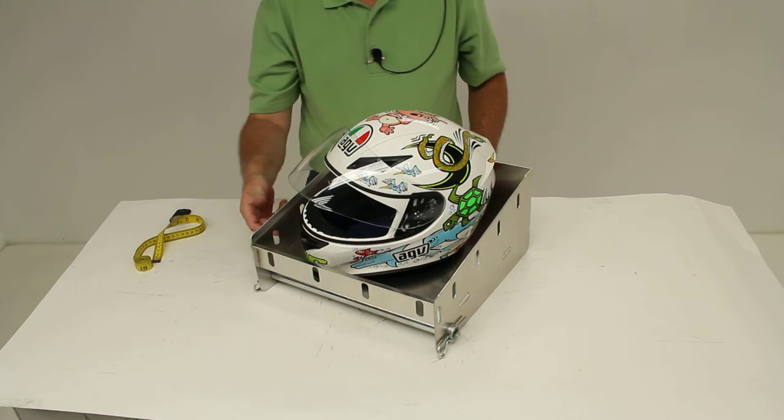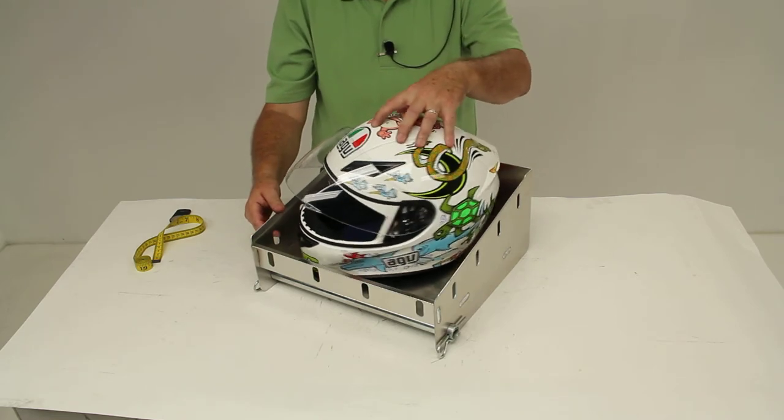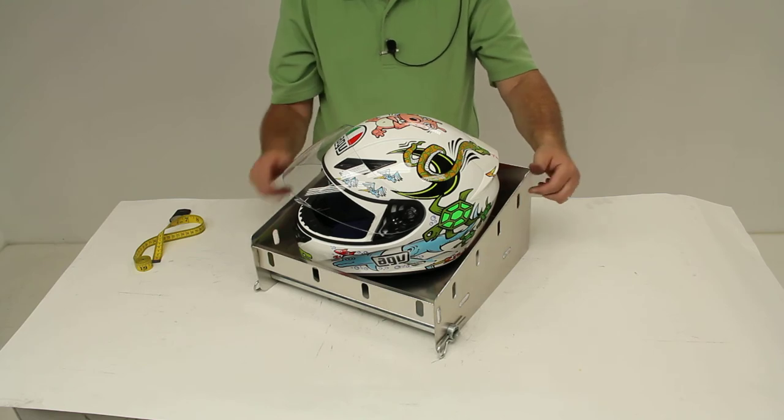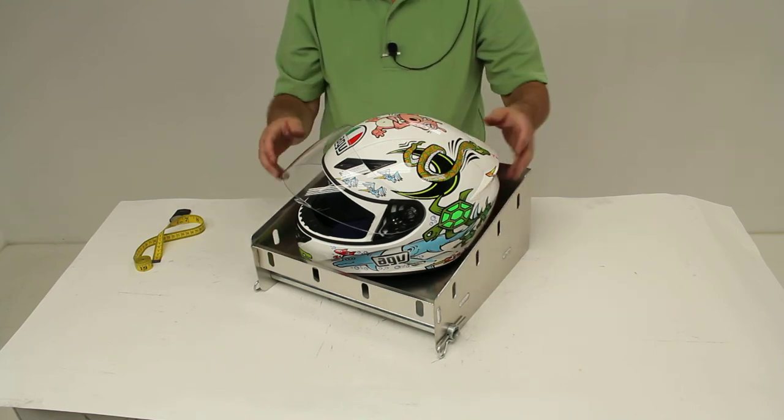And again, if you need to secure it down, you can just run a bungee cord from here to the hook on the other side, and one from here across, and that'll help hold the helmet.